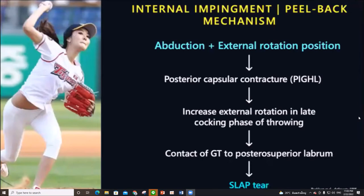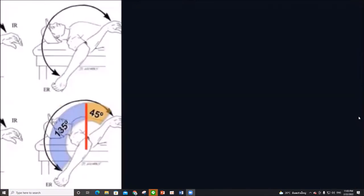Chronic cases can be attributed to internal impingement, which occurs in the ABER position, leading to posterior capsular contracture, and then to the posterior superior labrum impinging on the glenoid, leading to SLAP tear over time.